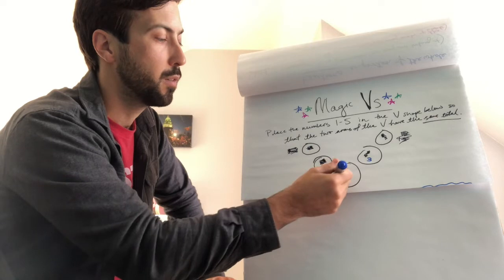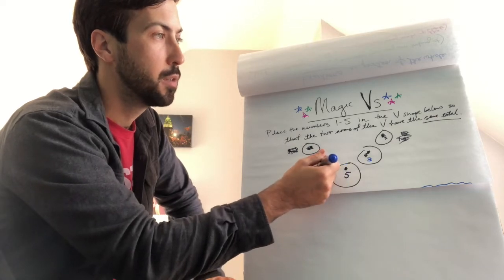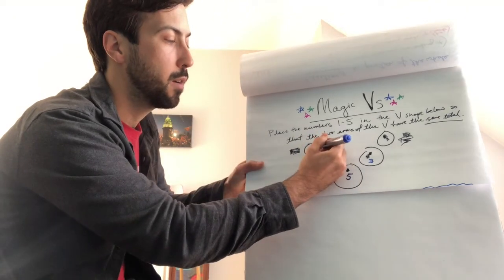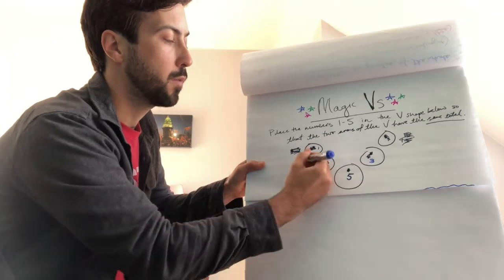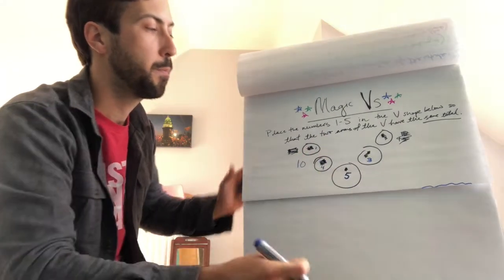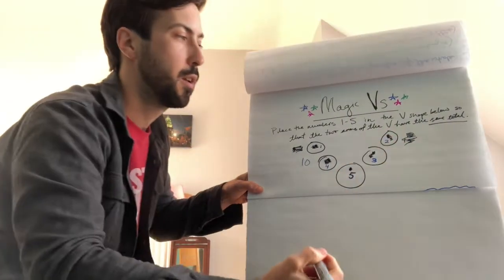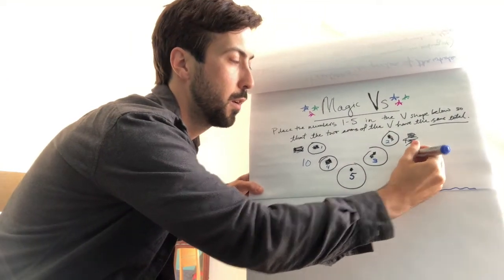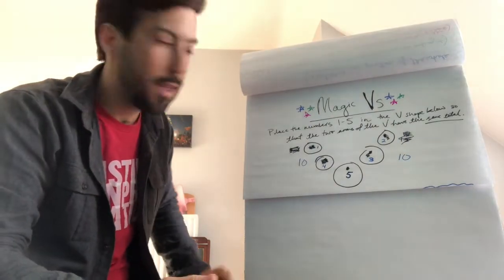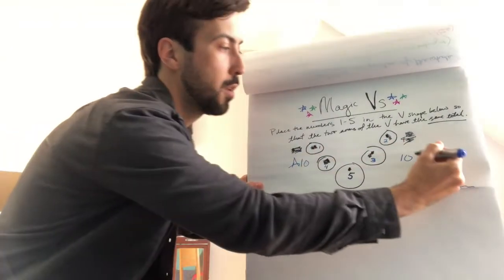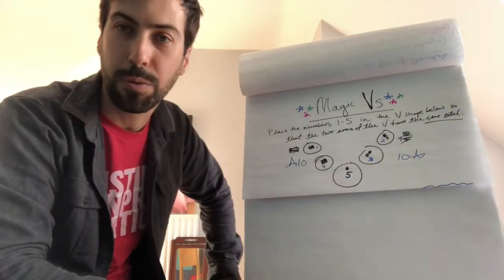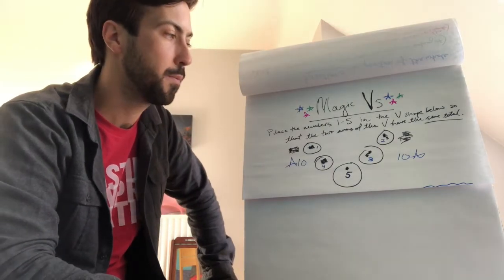So if we think about here, 5 add 4 is 9. If we added 1 to that, that would give us a total of 10. 5 add 3 is 8. If we added 2 to that, that would give us a 10. Amazing. Both sides have the same total. They both have 10.